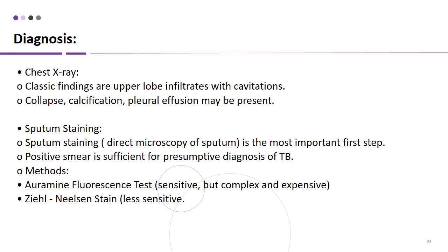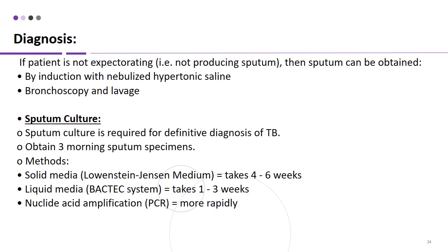Chest X-ray will show upper lobe infiltrates with cavitation, which is the classic finding, along with collapse, calcification, and pleural effusion. For diagnosis, sputum staining involves direct microscopy and is the most important first step. A positive smear is sufficient for presumptive diagnosis. Methods include auramine fluorescent stain or Ziehl-Neelsen stain — Ziehl-Neelsen is less sensitive but mostly used. If the patient is not expectorating, sputum can be obtained by bronchoscopy and lavage, or by induction with nebulized hypertonic saline.